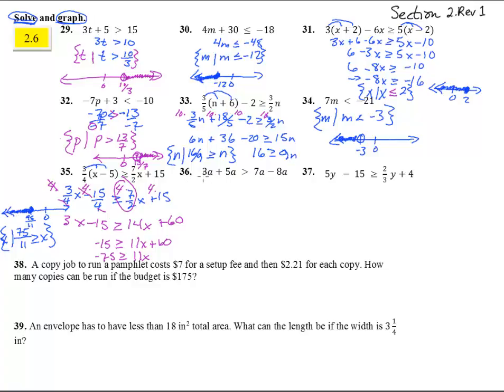Number 36. 3a plus 5a, that's 8a, is bigger than 7a minus 8a. That's negative 1a. Add a to both sides. We get 9a is bigger than 0. Divide both sides by 9. And we get a is greater than 0. On the graph, make it look pretty. We have 0, and a is going to be the bigger ones up here. And circle 0 right above it.